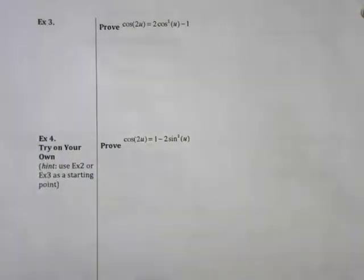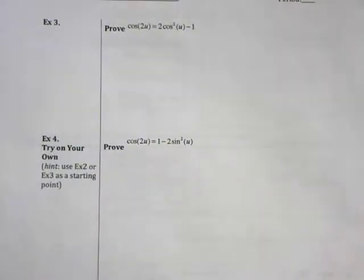Hello pre-calculus students and welcome to the continuing lesson on identities of double angles, half angles, and power reducing. In this particular video we're going to prove this example here, which is another version of the cosine of a double angle.